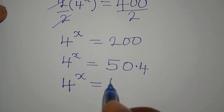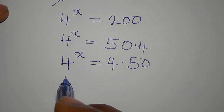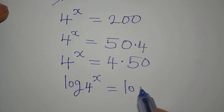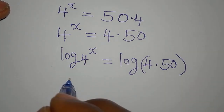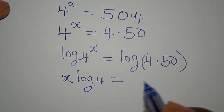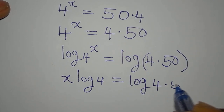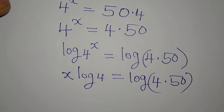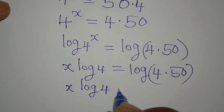Let me write the right-hand side as 4 times 50. We'll take the log of both sides to get log of 4 to the power of x equals log of 4 multiplied by 50. On the left side, the power comes down in front, so we have x times log 4.